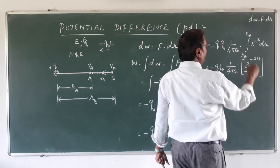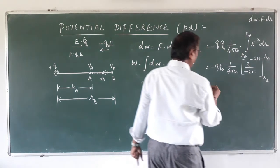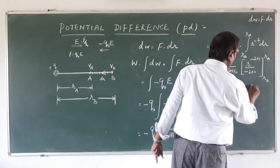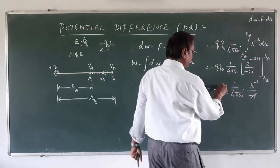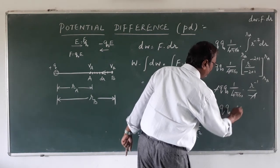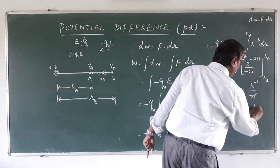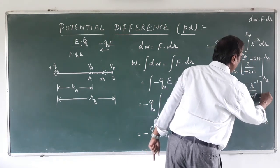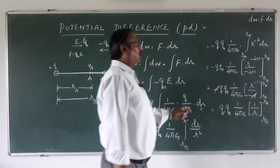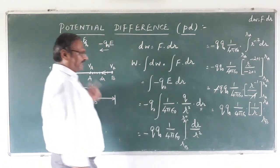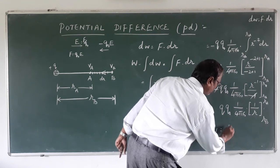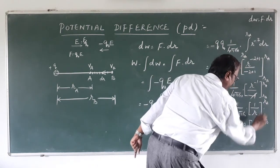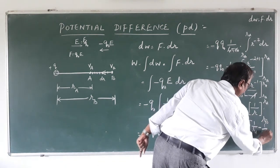Removing the integration symbol and applying the limits rB to rA, we get minus q·q₀ into 1 upon 4 pi epsilon naught into r to the power minus 1 divided by minus 1. The two negatives cancel, leaving q·q₀ into 1 upon 4 pi epsilon naught into 1 upon r, evaluated from rB to rA. Substituting the limits gives the work done in moving the charge from B to A.